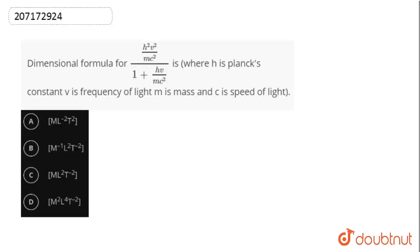Hi, welcome to Doubtnet. The question is, find the dimensional formula of this expression, where H is the Planck's constant, V is the frequency of light, M is the mass, and C is the speed of light.